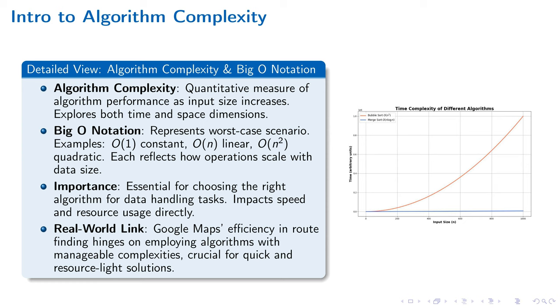For example, O(1) represents constant complexity, unaffected by input size, whereas O(n) and O(n²) depict linear and quadratic complexities, demonstrating how execution time increases with data volume.